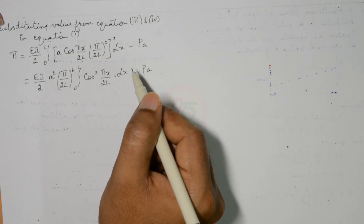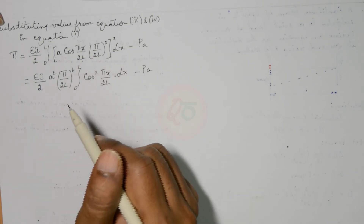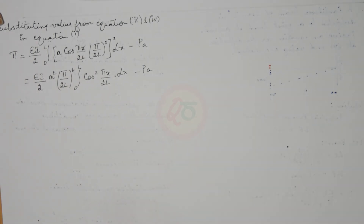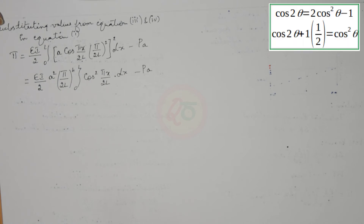Using the trigonometric identity cos²θ equals (1 plus cos2θ)/2 — an equation which will be shown in the video — we can rewrite the integral.